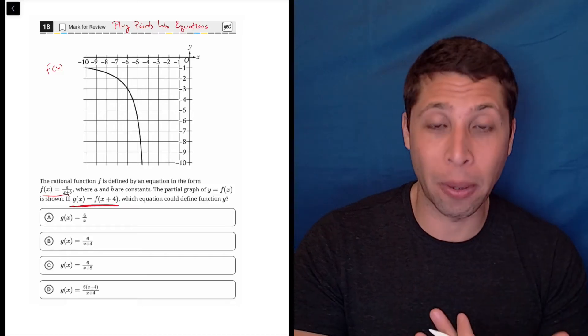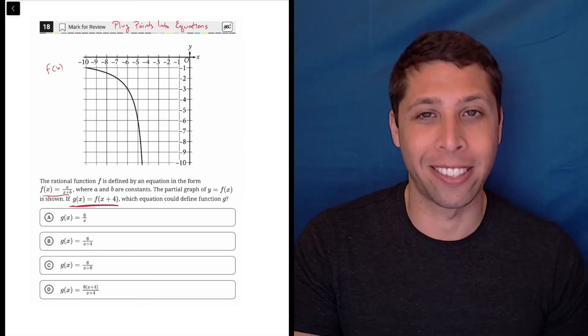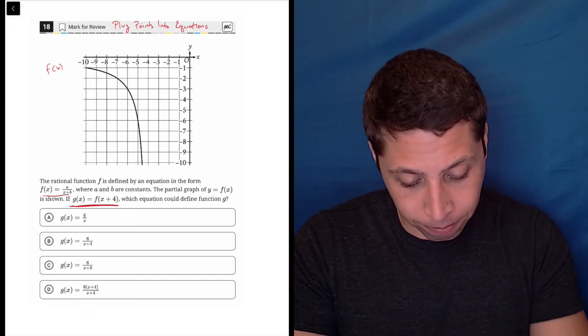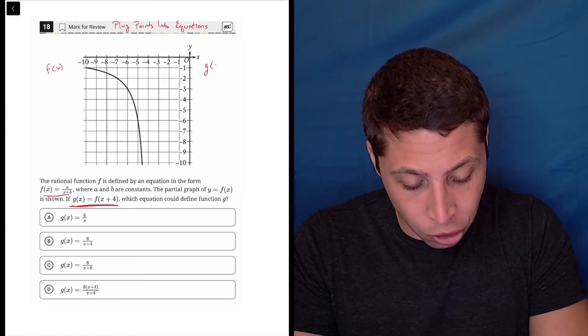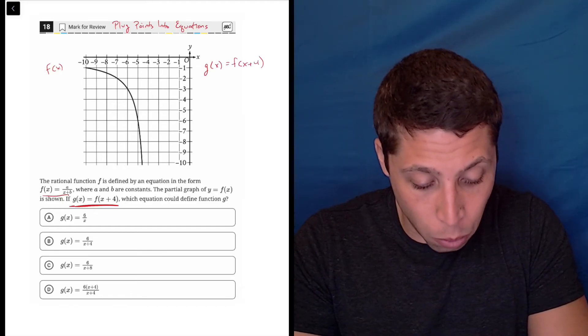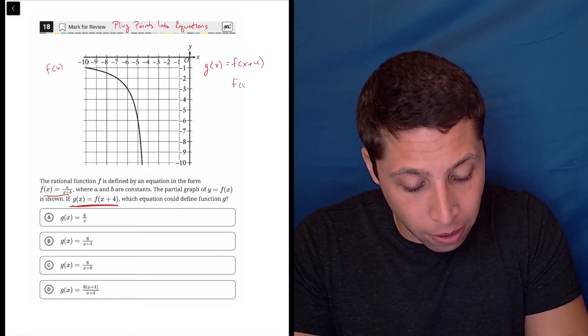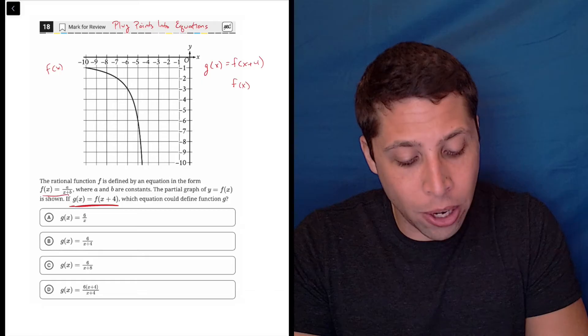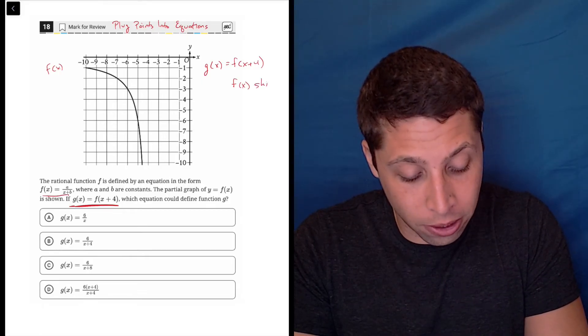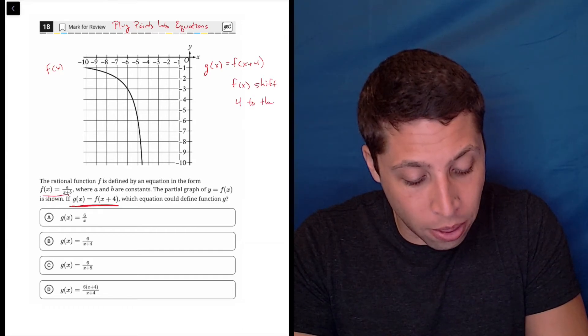But now for the SAT, this is coming up more and more often, so you're going to need to memorize it again, at least until SAT time is over. So what this means, let me put it up here, g of x equals f of x plus four means that we are taking the f graph, the f of x graph, and we are shifting it. Shift four to the left.